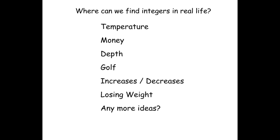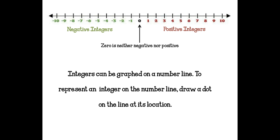Try to come up with ideas of where you're seeing integers in your daily life. On a number line, everything to the left of zero is negative. Zero is neither positive nor negative — it doesn't count in either one. All numbers to the right are positive, so anything greater than zero is a positive integer.